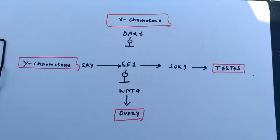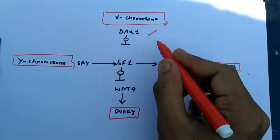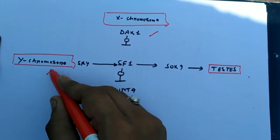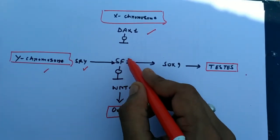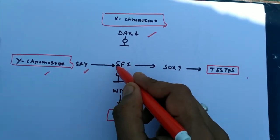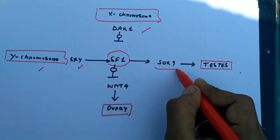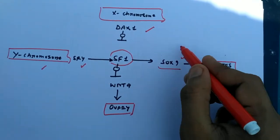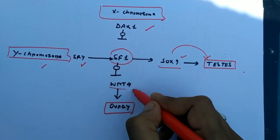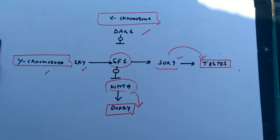There is an overview of the gene network: DAX1 on the X chromosome and SRY on the Y chromosome inhibit and stimulate the activity of SF1. SF1 then activates SOX9, which stimulates the growth of testes. If WNT4/RSPO1 suppresses this pathway, it promotes ovary development.